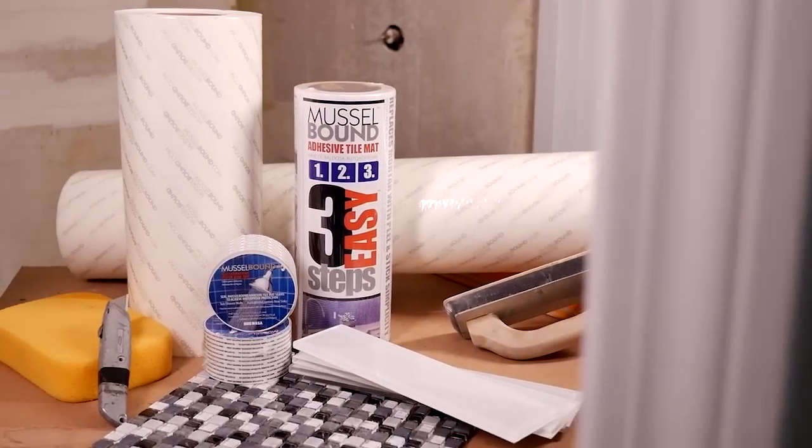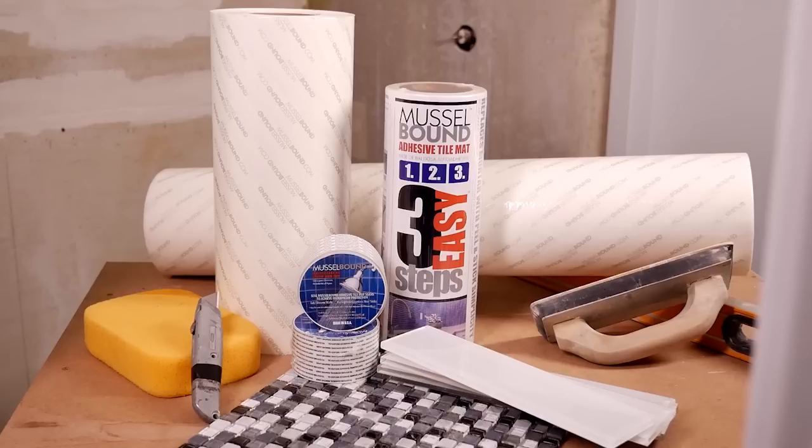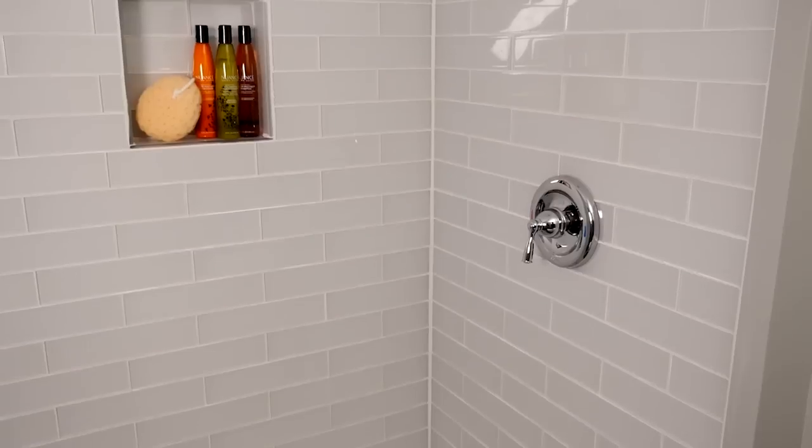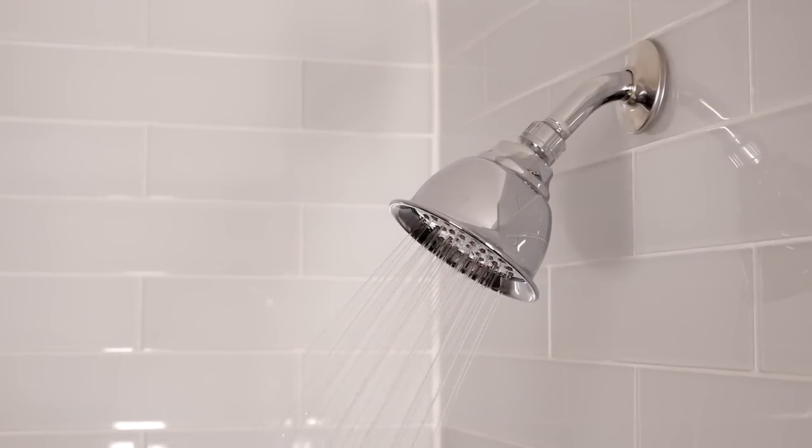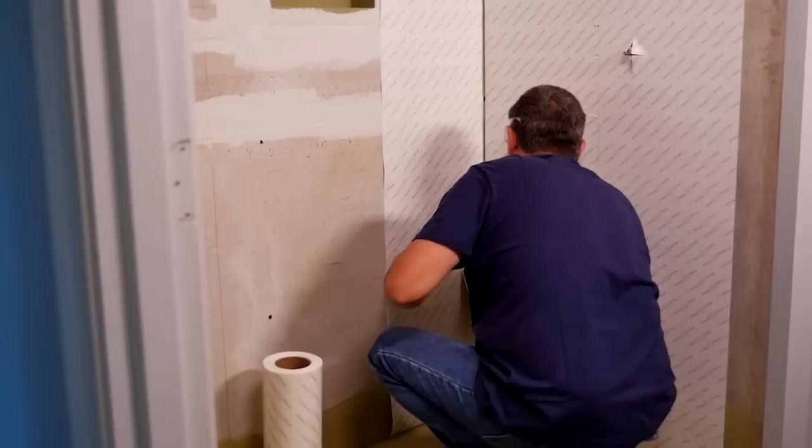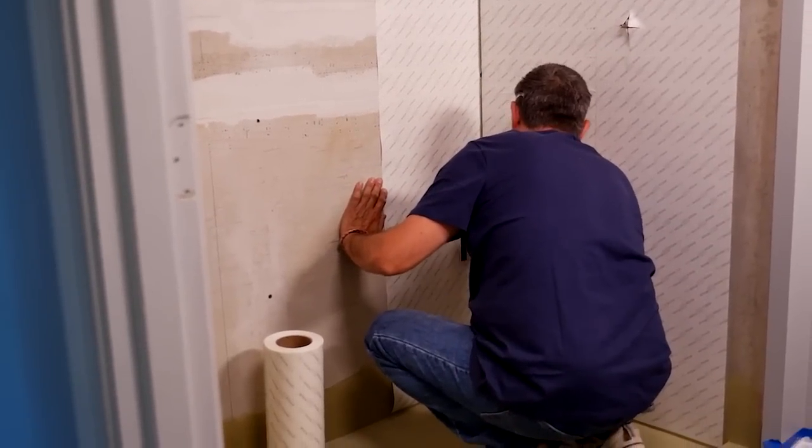Musclebound Adhesive Tile Mat and Waterproofing Seam Tape consolidate the expensive and time-consuming steps of tiling shower walls. Musclebound is the only combined waterproofing membrane and tile adhesive that also allows the installer to grout immediately after setting tile.